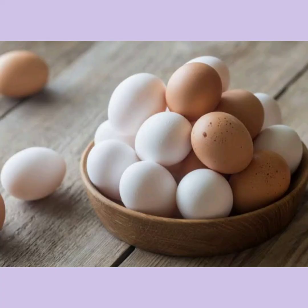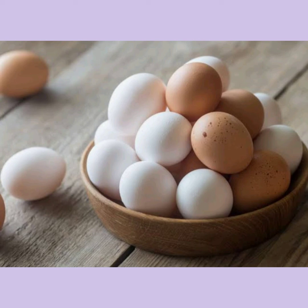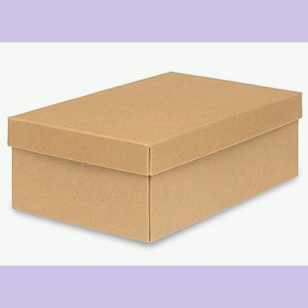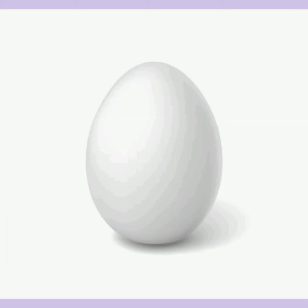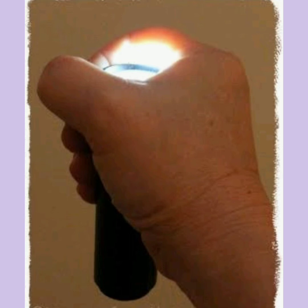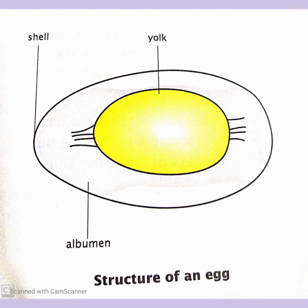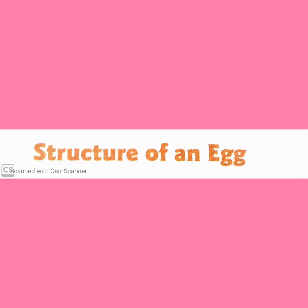Children, you all must have seen an egg either in a picture or in real, so you know how it looks from outside. Today, we will learn how it looks from inside. There is an activity you can try at home: take a shoe box, cut a hollow space in the lid to place an egg, and place a lit torch upright in the box to observe the egg. With this, we will learn about the structure of an egg.